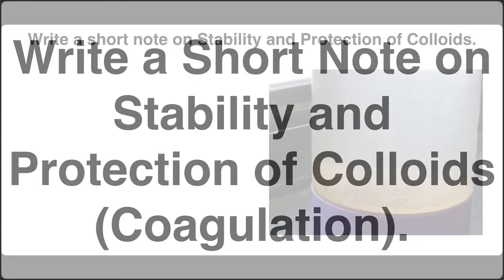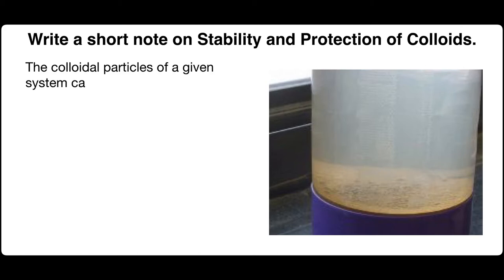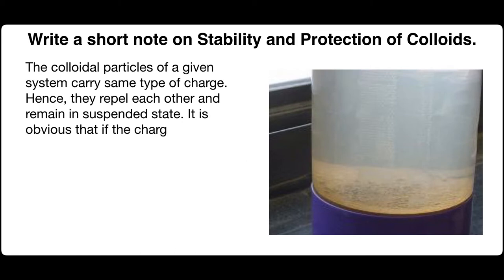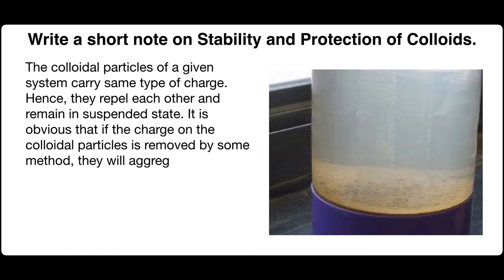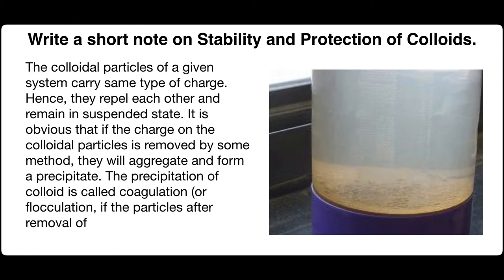The colloidal particles of a given system carry the same type of charges, hence they repel each other and remain in a suspended state. If the charge on the colloidal particle is removed by some method, they will aggregate and form a precipitate. The precipitation of colloids is called coagulation or flocculation. If the precipitate floats on the surface of the liquid instead of settling down, it is also termed coagulation.